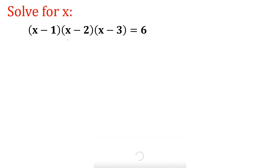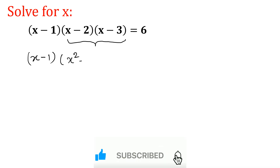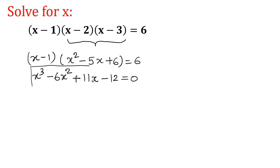Let us begin by taking the product of these two brackets. Writing x minus 1 as it is, the second product term comes out as x squared minus 5x plus 6, and that equals 6. Taking this product again, the equation converts into x cubed minus 6x squared plus 11x minus 12. This is a very important equation for our solution.